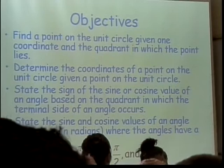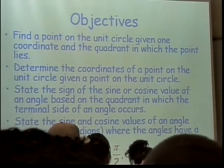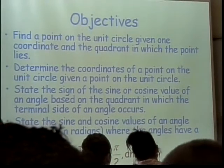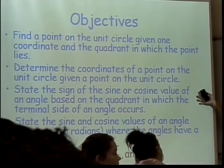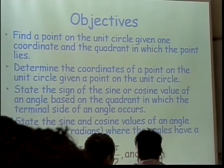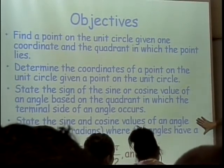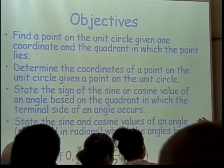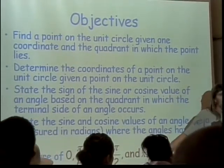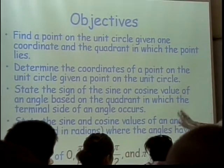We are going to be able to find a point on the unit circle given one of the coordinates and the quadrant in which the point lies. We're going to be able to determine the coordinates of a point on the unit circle given another point on the unit circle. You're going to do the basic stating the sign (S-I-G-N) of the sine and cosine function of an angle based on the quadrant where the terminal side of the angle falls. And you're going to be able to state the sine and cosine values of angles measured in radians where the angles have measures of 0, pi over 6, pi over 3, pi over 4, pi over 2, and pi.